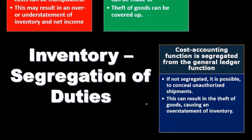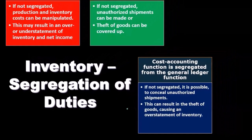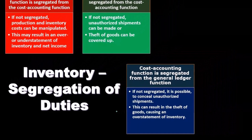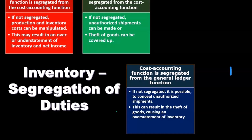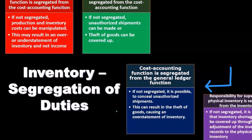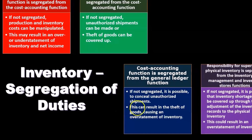The cost accounting function is separated from the general ledger function. If it weren't, it would be possible to conceal unauthorized shipments, which can result in the theft of goods and an overstatement of inventory.